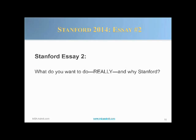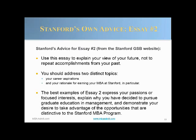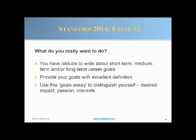Essay 2: 'What do you really want to do, and why Stanford?' Go to the Stanford website and read their guidance carefully. They're asking you to explain your view of the future — they actually don't want you to recount the past, which is why the resume and application form are important for giving depth to your past professional achievements. In this essay you should be forward-looking: your goals, your future career aspirations, and your rationale for earning your MBA at Stanford. You have latitude to write about short-term, medium-term, or long-term career goals, but make sure to give definition to your goals — that's very important, particularly for Stanford.